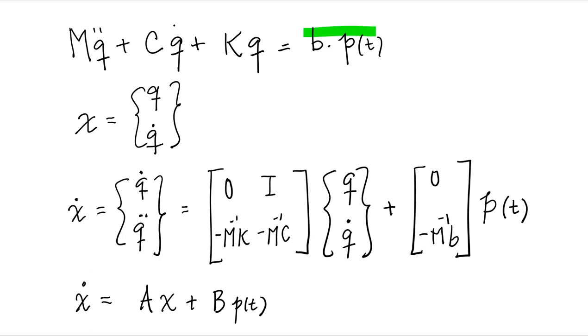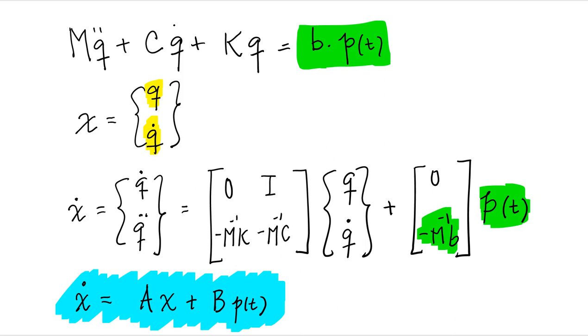Now what happens if you have some external loading acting on the system? Can you write it in state space form? Yes, you can. You simply use the same definition of state, Q, Q dot. You write your equations just like before. And in order to add this term, this term comes in here. You can do the math and see that it does work out to the actual equation of motion. The beauty of this is that now you have a nice first order equation that looks like this. X dot equals AX plus B P of T. B is a matrix. In this case it's this right here. This is B. And this is A.